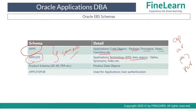There is a separate lesson dedicated to ATG, so do not worry about its concepts at this point. All the Applications Technology Layer — ATG-specific data objects — meaning tables, synonyms, and indexes, are located in the ApplSys Schema.